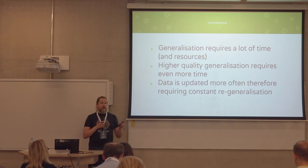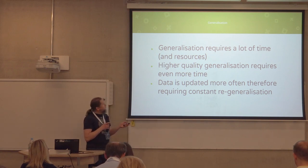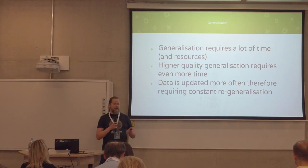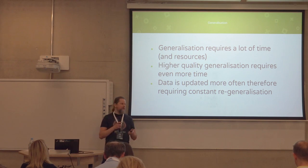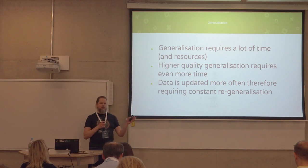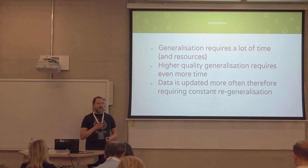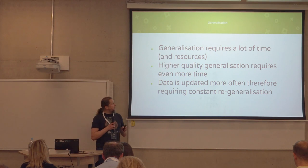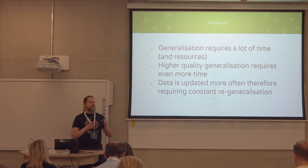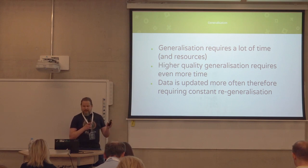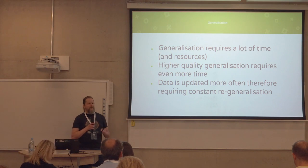This is what cartographers would be doing. But now, because the data is changing very fast — in OpenStreetMap data is changing every minute or so — the requirement to do generalization is to do it as fast as possible and as soon as possible. The problem is that we want to do it automatically, because if a person does it, it will take too much time. Those algorithms are pretty complex and require a lot of time and resources.